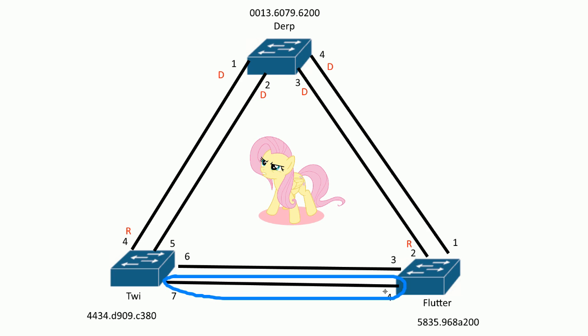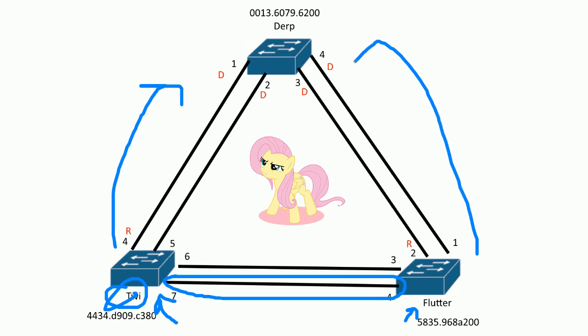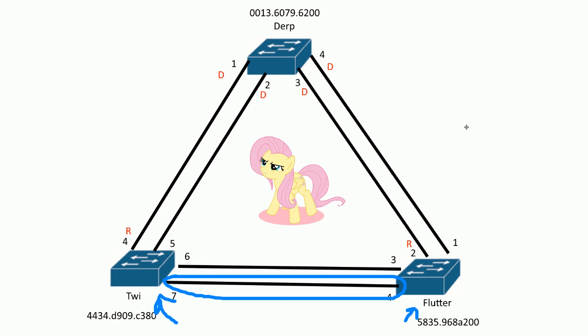So which side becomes designated and which side becomes the blocked alternate port? We look at the switches connected to this link — flutter and twine — and ask: which switch has the lowest cost? Well, twine has a cost of 19 to the root; we already know because it's advertising 19 to everybody. And this switch also has a cost of 19, advertising 19 to everybody. So it's tied because both switches say the cost is 19.